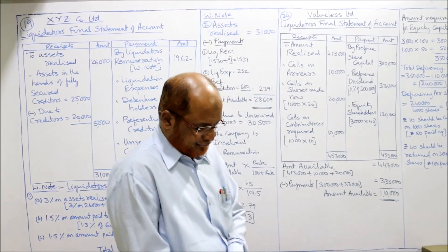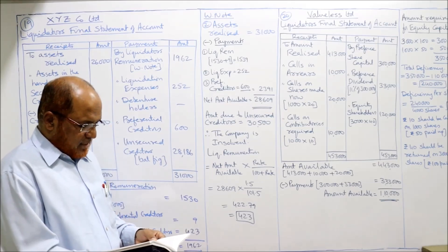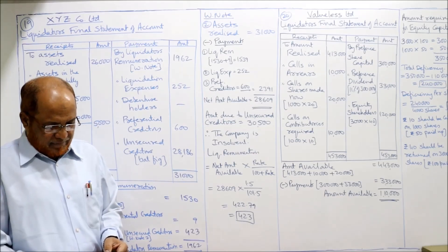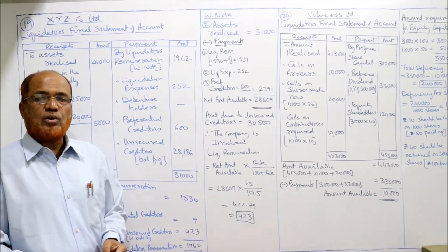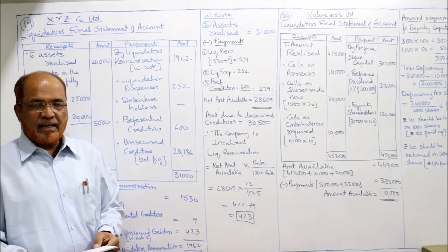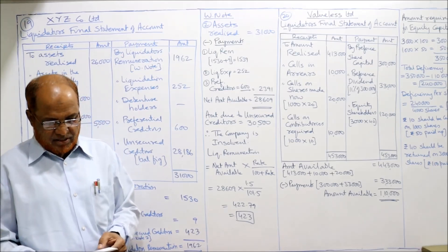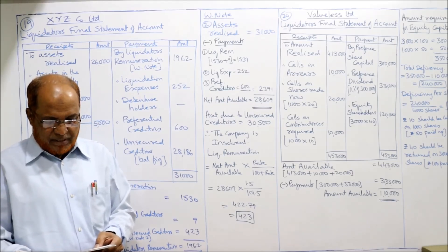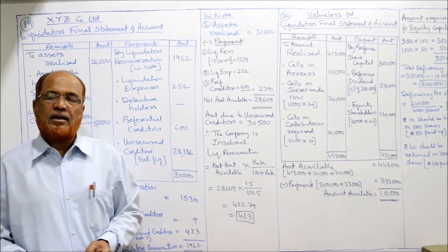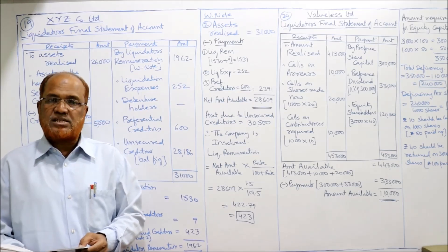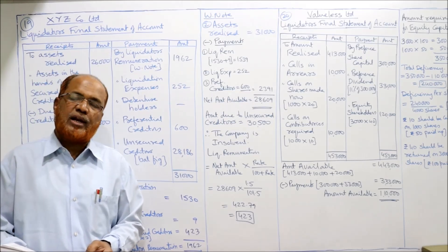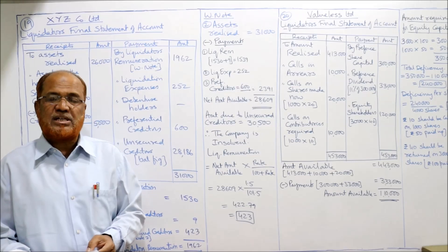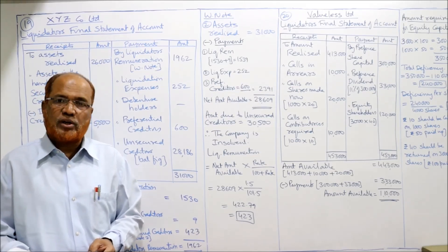Now problem number 20. The position of Valueless Limited on liquidation: issued and paid-up capital — 3,000 preference shares of 100 each fully paid = 3,00,000 (11% dividend rate); 3,000 equity shares of 100 each fully called up; and 1,000 equity shares of rupees 50 each, rupees 30 per share called up. So 20 rupees per share is still due on the second class.